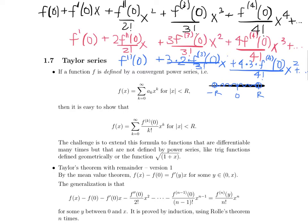It may or may not surprise you that trig functions — sine, cosine — as well as exponential functions like e to the x, are very easily represented because they have these nice cyclical derivatives that you can compute to build these coefficients. But the issue is that it's very tricky to extend this to functions that are differentiable many times but not necessarily defined by power series, like trig functions that are defined geometrically, or the function the square root of 1 plus x.